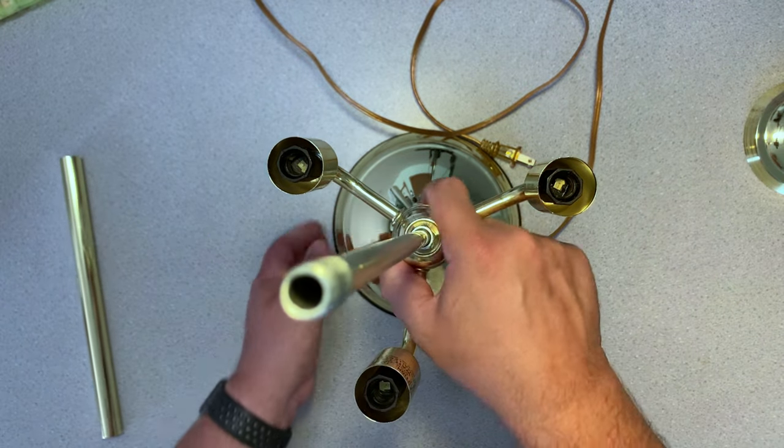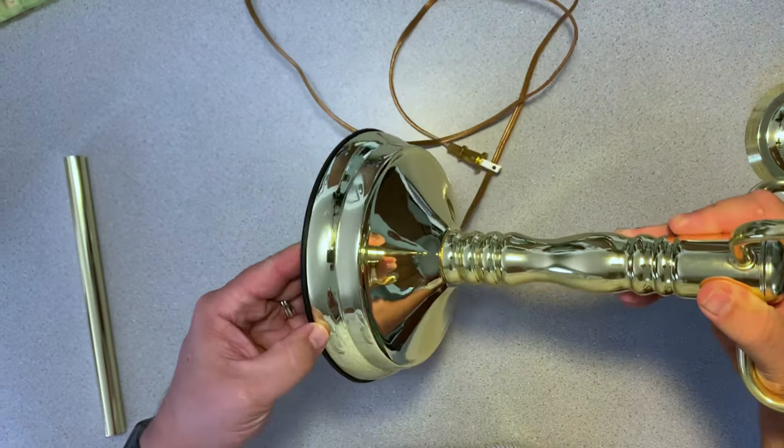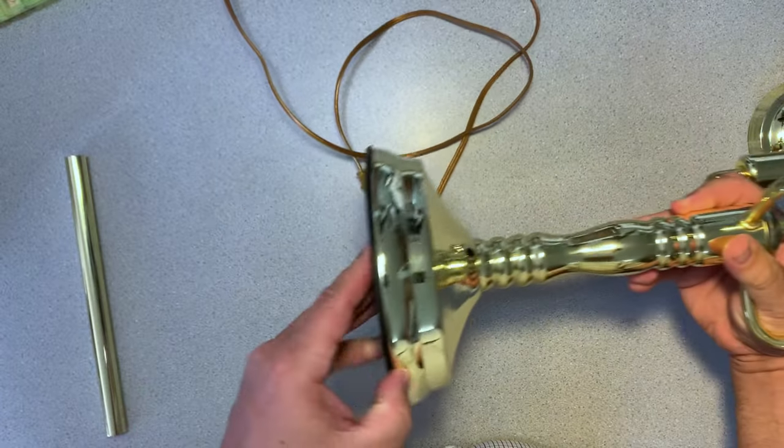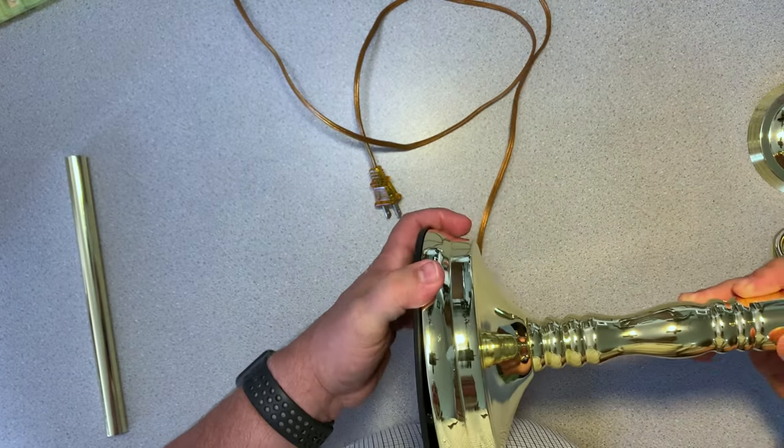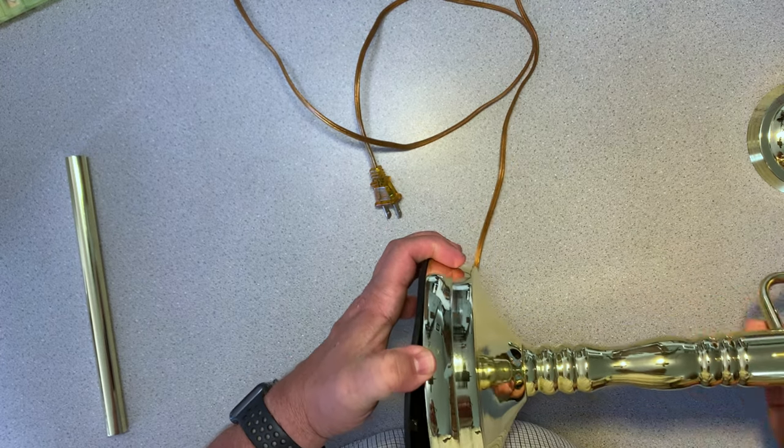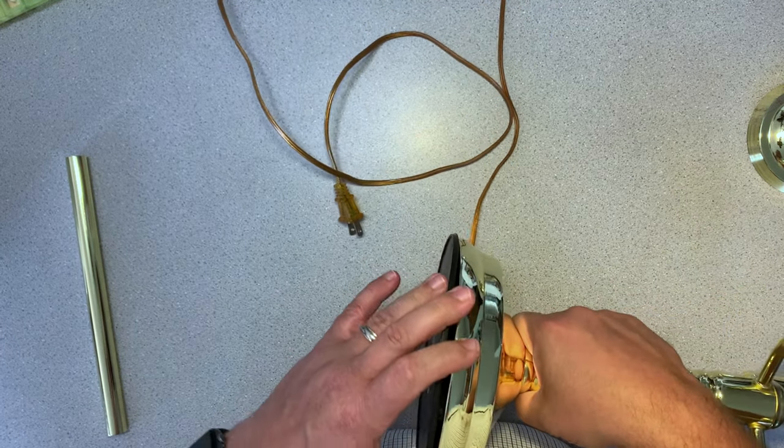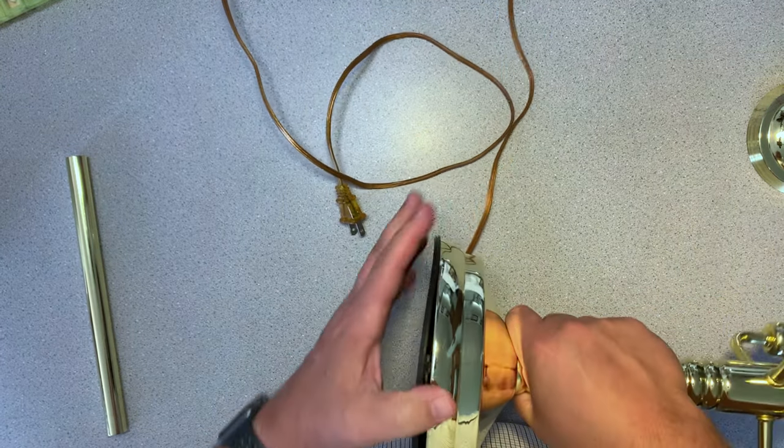The next thing we'll need to do is turn it over and look at the base and try to figure out how to get this off. I initially thought that this would twist, so I was trying to twist it one way or the other and it wasn't twisting.